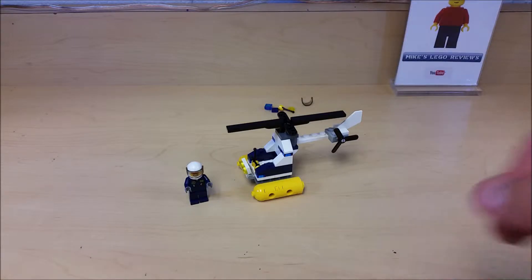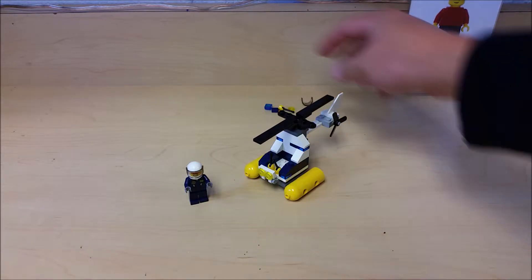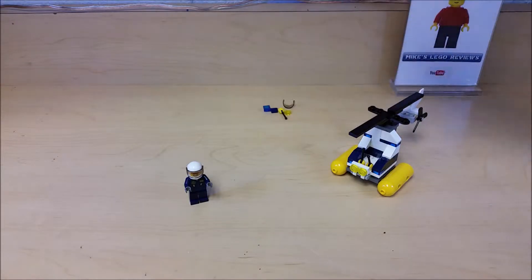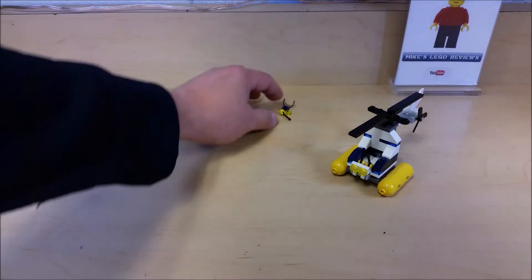So guys, the helicopter is complete. As you can see, you get a few leftover pieces over here: an extra windshield, a control arm, a couple of light type pieces, and one of the blue squares.